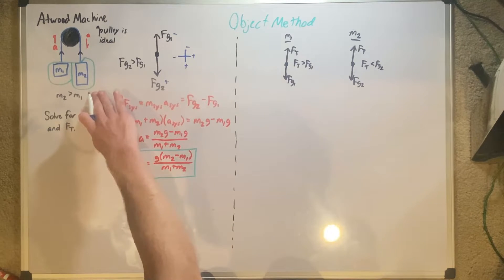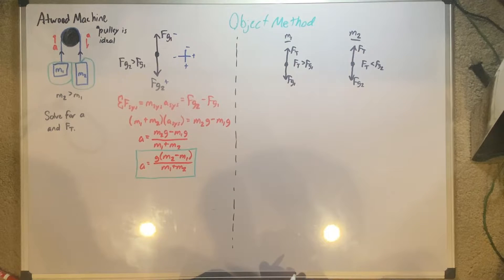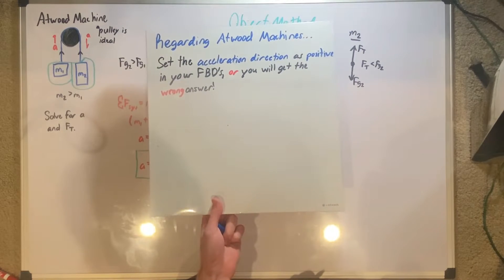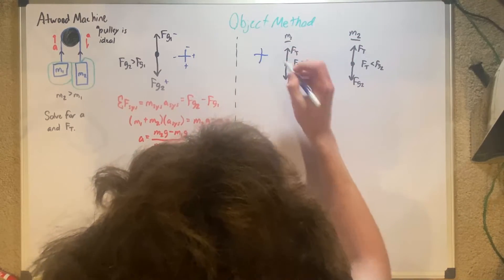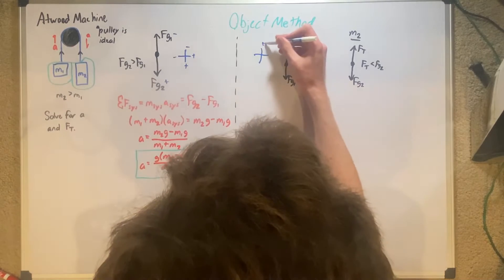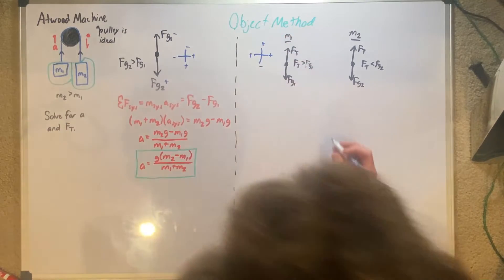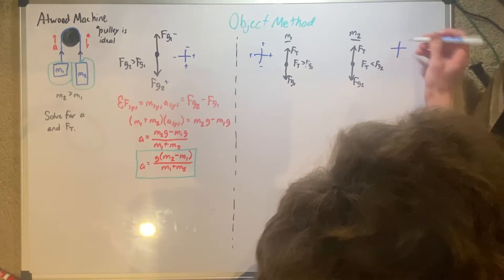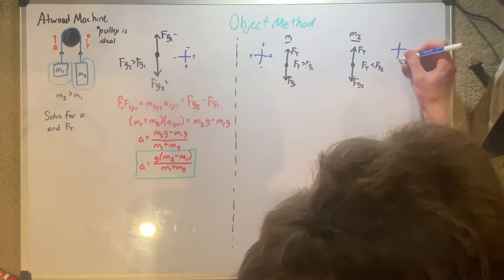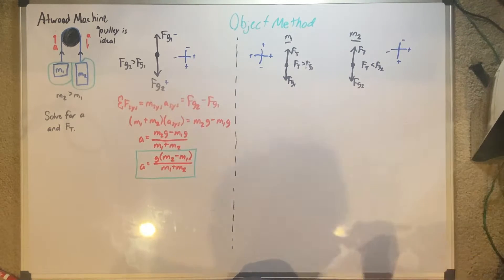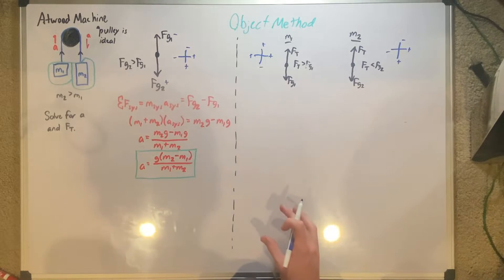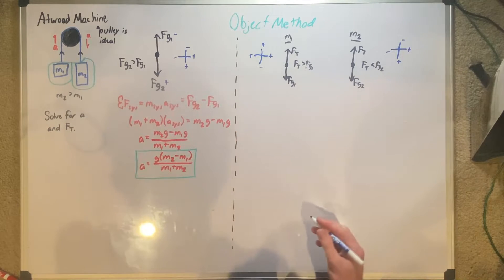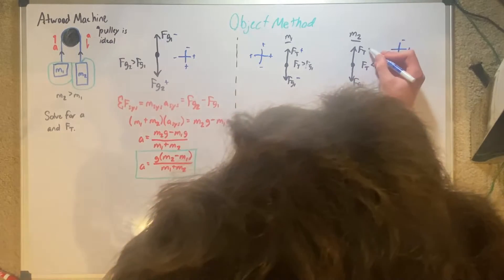Now we set our positives and negatives. We need to do our positives and negatives in accordance with the acceleration direction, or you'll get the wrong answer. On M1, mass 1 accelerates upwards, so positive is upwards and downwards is negative. On M2, it accelerates downwards, so positive is downwards and negative is up. That's probably the hardest part — setting things up and down — and then the second hardest part would just be simplifying it all down.